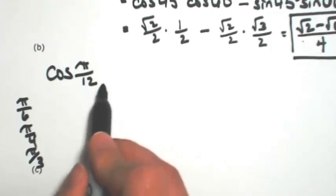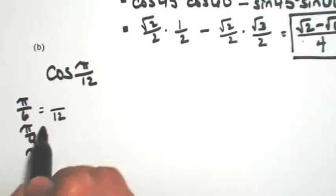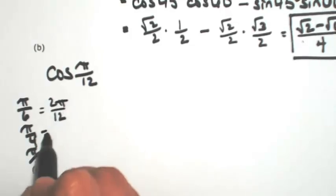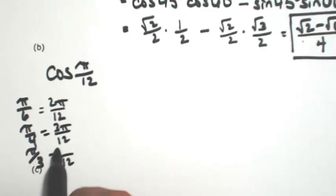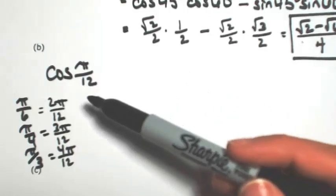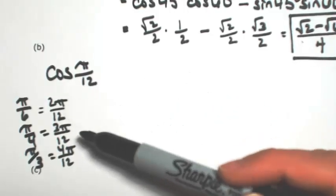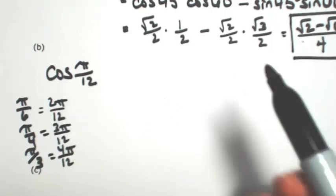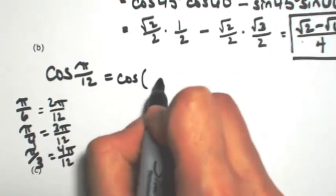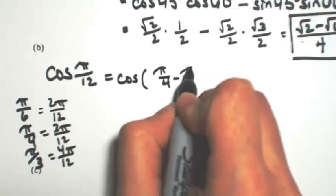So converting these with a common denominator of 12, I would get 2 pi over 12, 3 pi over 12, and 4 pi over 12. So if I were to subtract 3 pi over 12, and then minus 2 pi over 12, that gives me 1 pi over 12. So this is the same thing as the cosine of pi over 4 minus pi over 6.